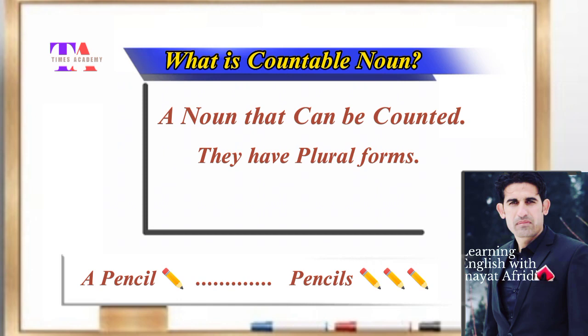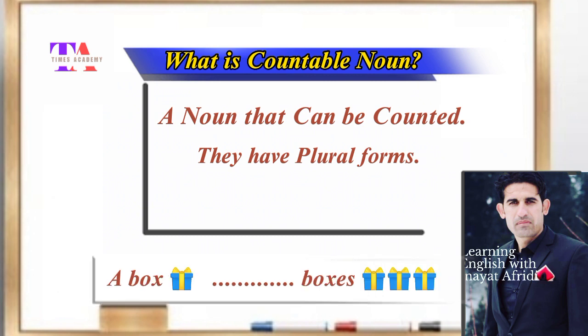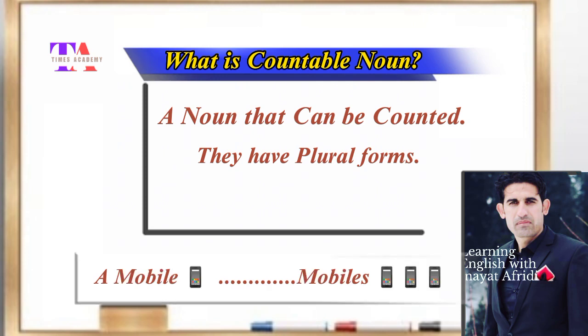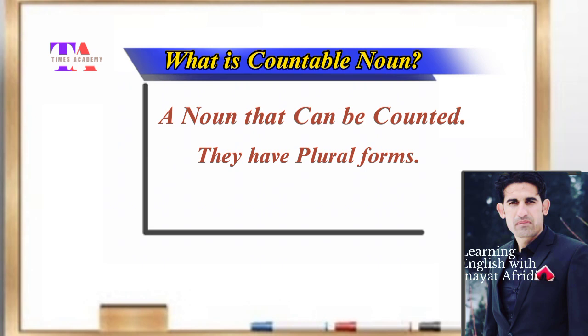The second point about countable nouns is that they have plural forms. For example: a pencil becomes pencils, a box becomes boxes, a mobile becomes mobiles. If you look at these examples, we have both the singular and the plural forms of the countable nouns.